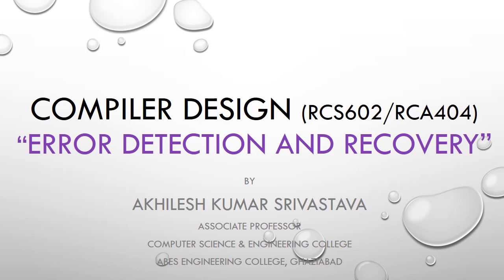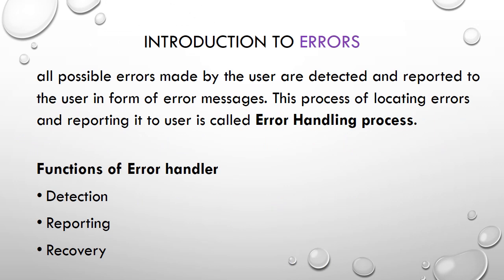We will discuss error detection and recovery schemes in compiler design. Whenever a programmer is writing a program, they are liable to make mistakes. The compiler design phases will identify those errors at different phases and report them to the programmer. We are going to study about various types of errors which a programmer can make and how to identify them in which phases of the compiler.